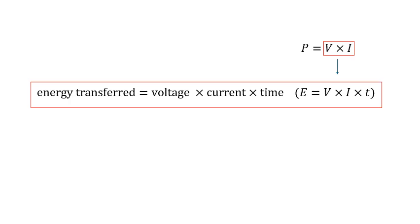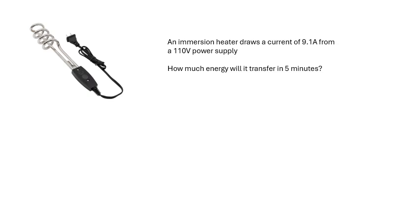Now look at this: energy transferred is voltage times current times time. We can't do a triangle on this one. You can only do a triangle if there are three things. There's four different things. We can't do a triangle. What we can do is if you look at it, E equals V times I times T. V times I is power, so it's just energy is power times time, isn't it? Have a go at this question. There you go. Pretty straightforward. What you could do is work out the power and then do energy is power times time. Would give the same answer, obviously.